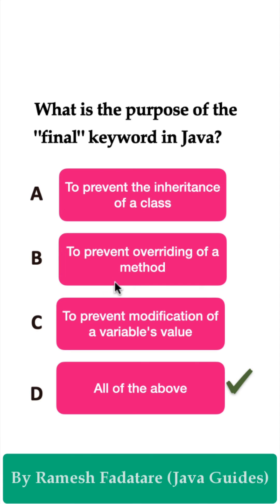We can also use the final keyword to prevent the modification of a variable's value. Once we define a member variable with the final keyword, we cannot assign a new value or modify that final member variable's value in the class.